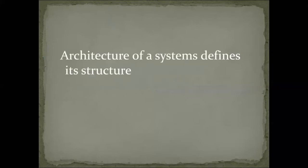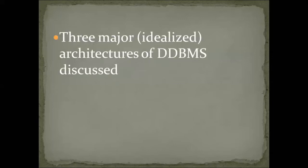The architecture of a system defines its structure. The components involved in this architecture — we have to know what is the functionality, what is the relationship between them, and how they interact with each other. It is covered in this line: the architecture of the system defines its structure, about its components, about its functionality, about its relationship and interaction with each other.